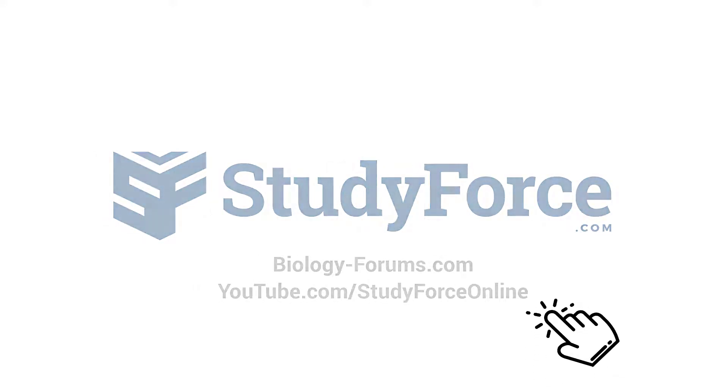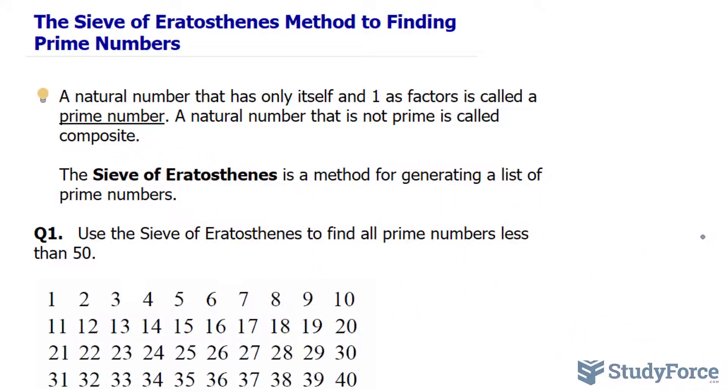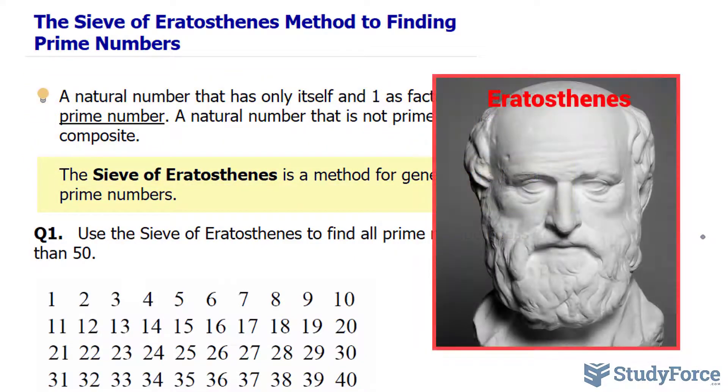In this lesson we'll discuss how to find prime numbers using the Sieve of Eratosthenes method. A natural number that has only itself and 1 as factors is called a prime number. A natural number that is not prime is called composite. The Sieve of Eratosthenes is a method for generating a list of prime numbers.